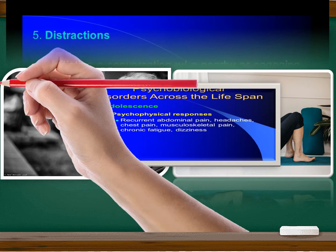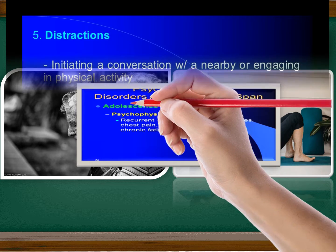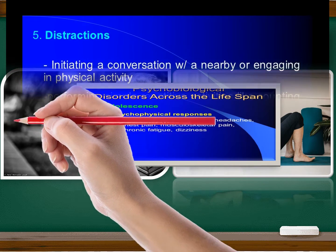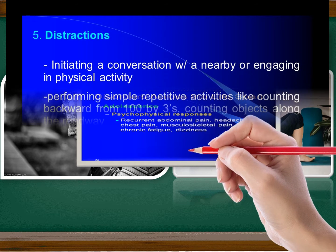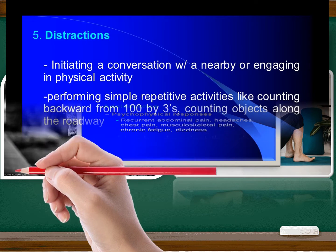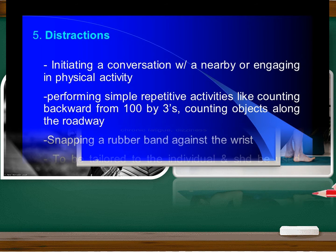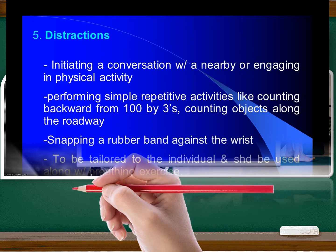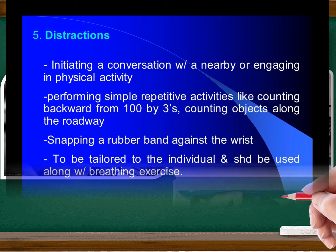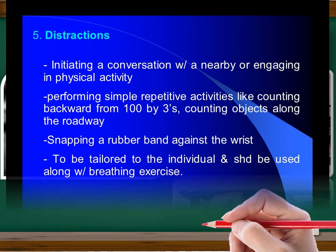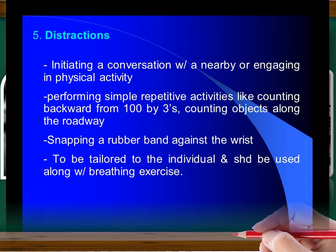Categories of anxiety disorders: 1. Panic disorder with or without agoraphobia. 2. Phobic disorders, social or specific. 3. Agoraphobia without panic disorder. 4. OCD. 5. Post-traumatic stress disorder (PTSD). 6. Acute stress disorder. 7. Generalized anxiety disorder. 8. Substance-induced anxiety disorder.